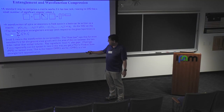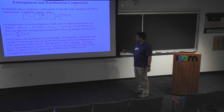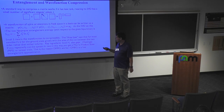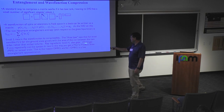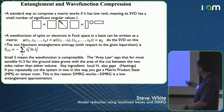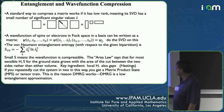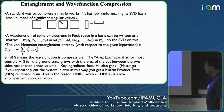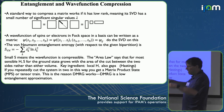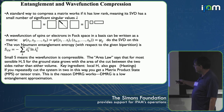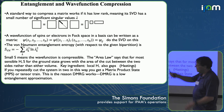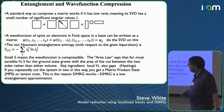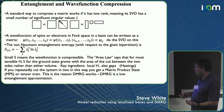The von Neumann entanglement entropy is defined with respect to the singular values lambda of this SVD: S = -sum lambda^2 log(lambda^2), where lambda-squared plays the role of probability. Small entropy means the wave function is compressible this way. There's something called the area law — a conjecture with proofs in certain cases, with Hastings doing notable work in one dimension. The area law says that for most sensible Hamiltonians with local terms, the entanglement entropy for the ground state grows with the area of the cut between the two sides, rather than with volume. For highly excited states, it's a volume law, which is much worse.